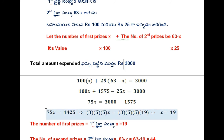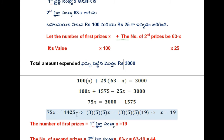75 is split into product of primes: 3 into 5 into 5. And 1425 is also split into product of primes: 3 into 5 into 5 into 19. Dividing both sides by 75 — x is equal to 19.